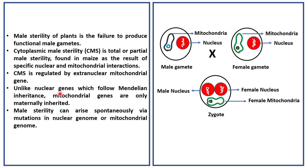Unlike nuclear genes which follow Mendelian inheritance, mitochondrial genes are only maternally inherited. When a male gamete and female gamete fuse, the cytoplasm of the female gamete along with its cellular organelles passes down into the zygote. Only the nucleus of the male gamete enters the zygote — the cytoplasm and its cellular organelles do not. Hence, mitochondrial genes are only inherited maternally, meaning these genes come only from the cytoplasm of the egg.